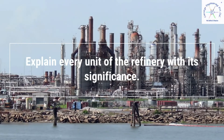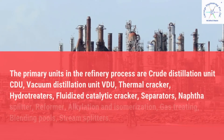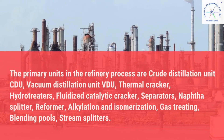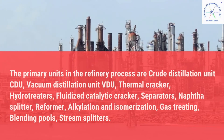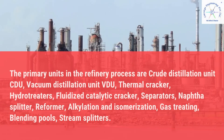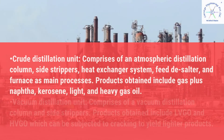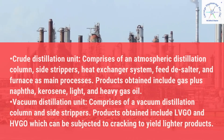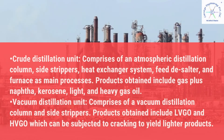Explain every unit of the refinery with its significance. The primary units in the refinery process are: crude distillation unit CDU, vacuum distillation unit VDU, thermal cracker, hydrotreaters, fluidized catalytic cracker, separators, naphtha splitter, reformer, alkylation and isomerization, gas treating, blending pools, and stream splitters. The crude distillation unit comprises an atmospheric distillation column, side strippers, heat exchanger system, feed desalter, and furnace as main processes. Products obtained include gas plus naphtha, kerosene, light and heavy gas oil.